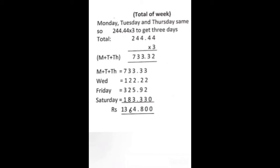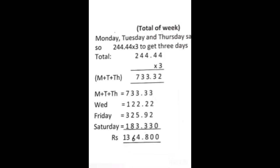Monday, Tuesday, and Thursday have the same hours, so we will multiply the income of Monday by 3. Then we will add all days — Monday, Tuesday, Thursday, Wednesday, Friday, and Saturday — to get the total income for the week for Tala.